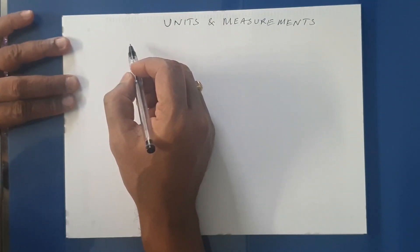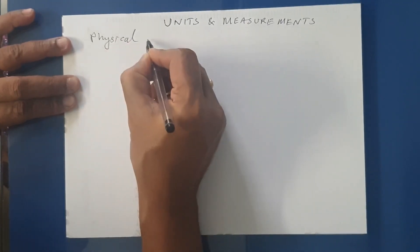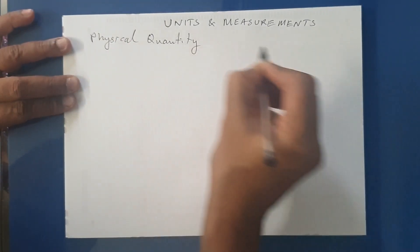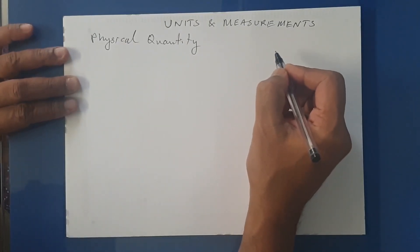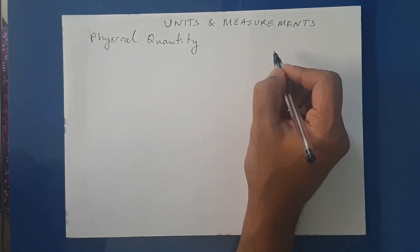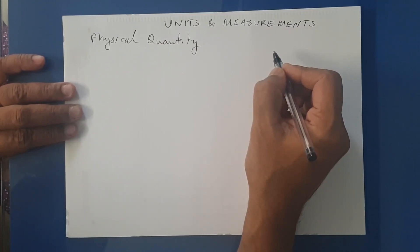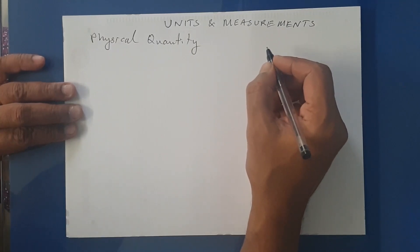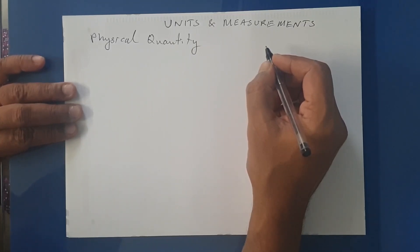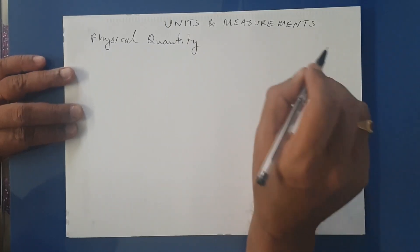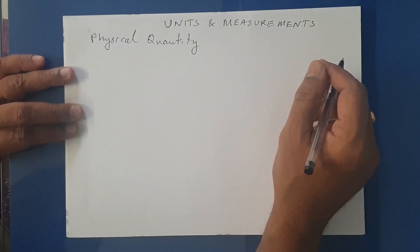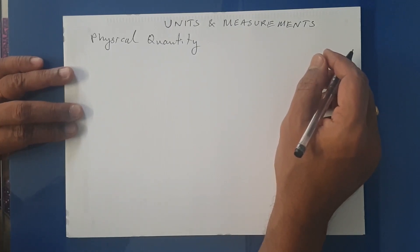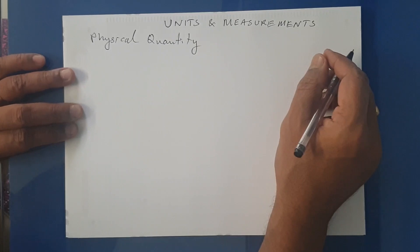First you have to know what is a physical quantity. Anything that can be measured is a physical quantity. For example, mass can be measured — the mass of the box is 20 kilograms, the mass of a book is one kilogram. Similarly, the length of your classroom, let us say seven meters — length can also be measured. So anything that can be measured is a physical quantity. We have various examples: mass, length, time, temperature, speed, force, etc.